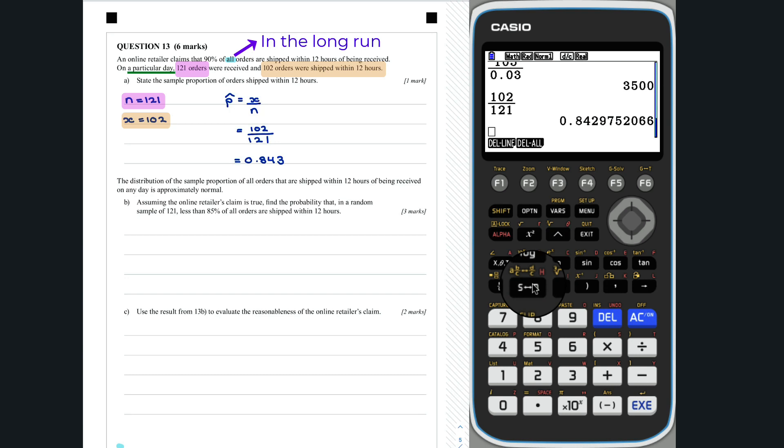Question 13b. We are told some information about the distribution of the sample proportion, which is the random variable capital p hat. In this case, capital p hat is normally distributed using the normal approximation of the binomial distribution, where mu of p hat is equal to p and sigma of p hat is equal to the square root of p by 1 take p over n.